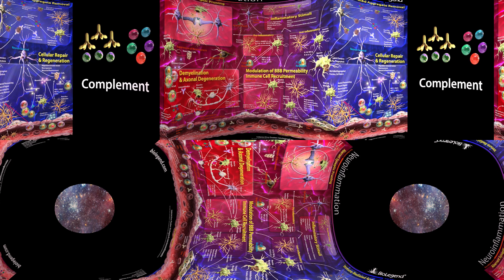Toxic aggregates produced by neurons can bind to and activate components of the complement system. This triggers activation of microglia and astrocytes and expression and shedding of complement proteins by these cells. Complement proteins can further bind to the aggregates and form complexes that are recognized and phagocytosed by microglia. Circulating autoantibodies can also bind to these aggregates and lead to their phagocytosis by microglia.